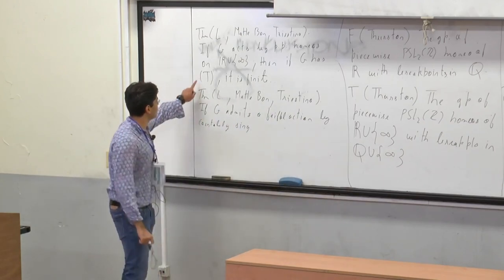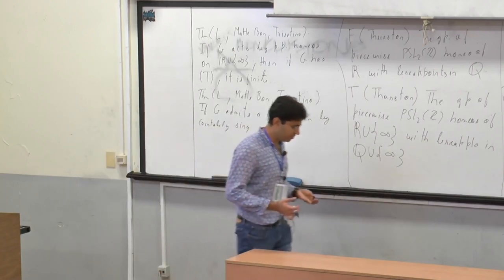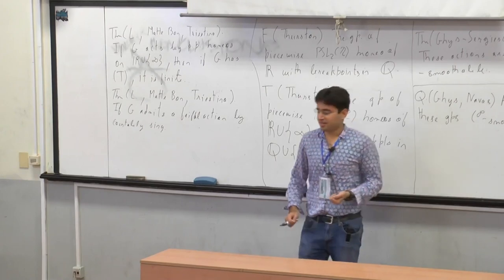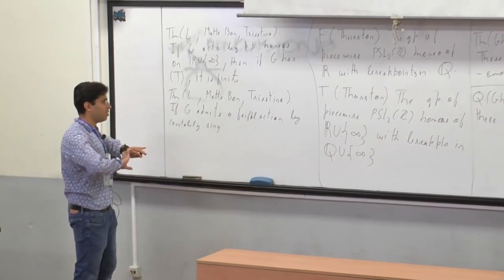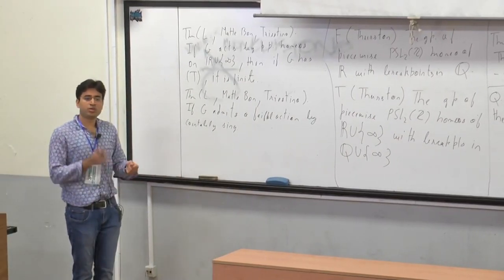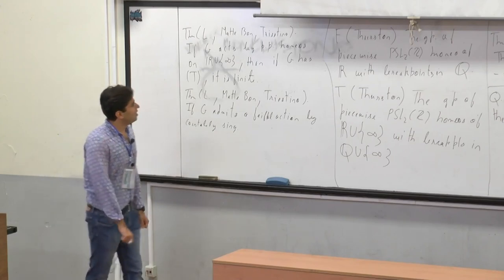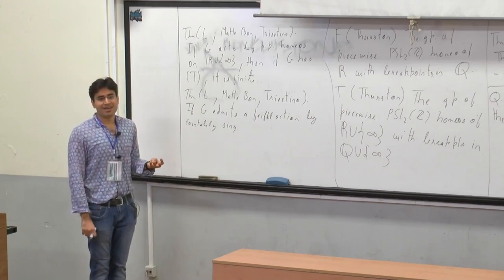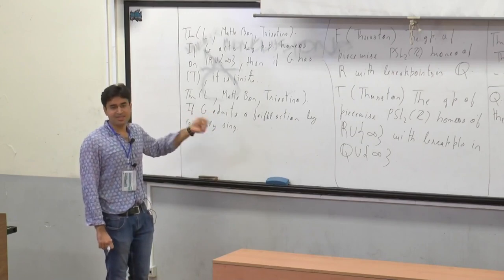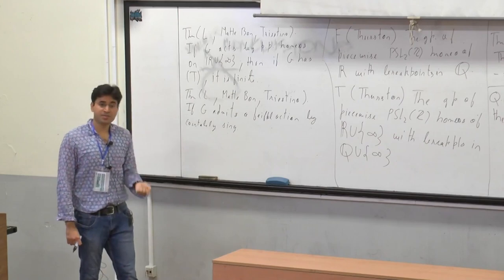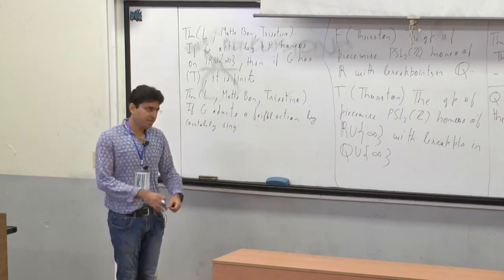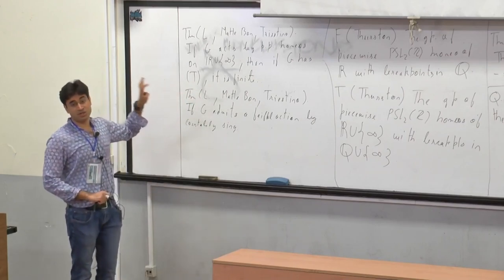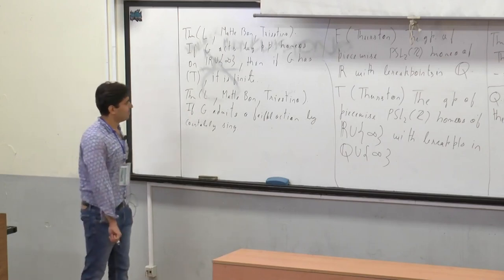Property T refers to Kazhdan's property T, which has many equivalent formulations — one is a fixed point property for affine isometric actions on Hilbert spaces. It's very much the opposite of amenability; the only groups that are both amenable and have property T are finite. The property actually used in these theorems is not property T itself but a consequence called property FW. FW says that whenever you have a group action on a set, every commensurate set is transfixed. If a group has property T, then it has FW, and FW emerges naturally in this setting through actions on groupoids of germs.